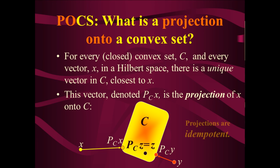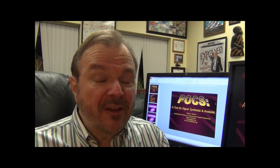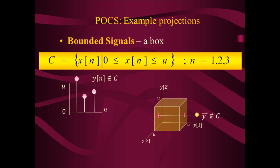Projections onto convex sets have a mathematical property called idempotence. Idempotence means if you do it twice, it's the same as doing it once — like vacuuming the floor: if you vacuum once and then again, the second time makes no difference. If you project onto a convex set once, you're on the convex set; project again and you're already there. This is the concept of idempotence.